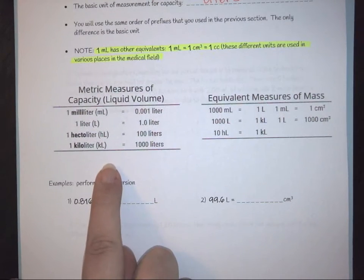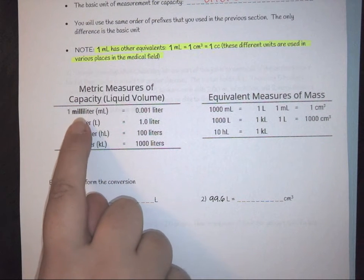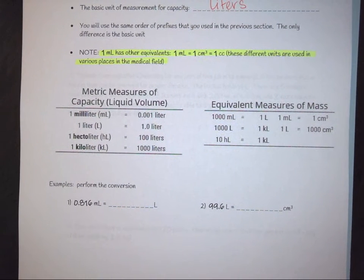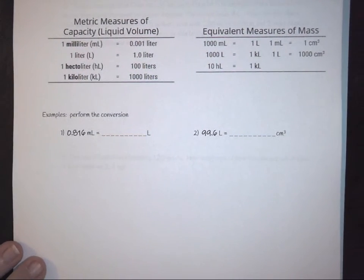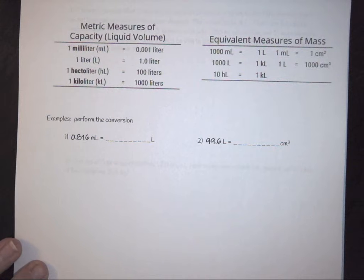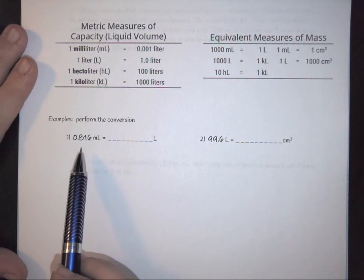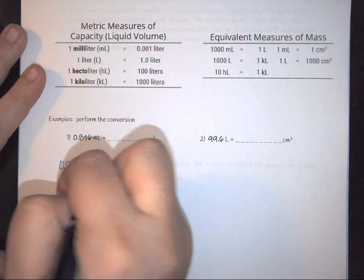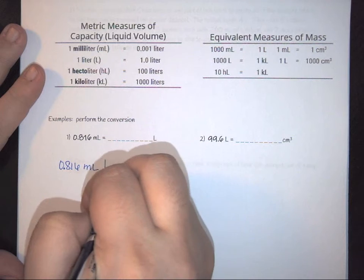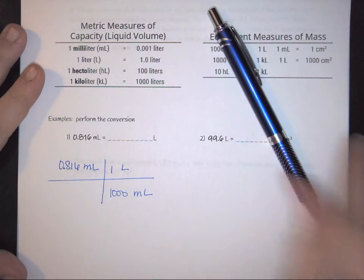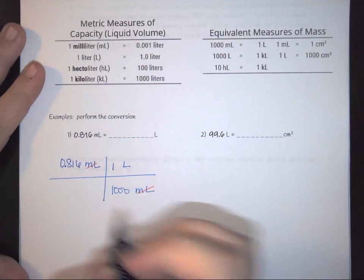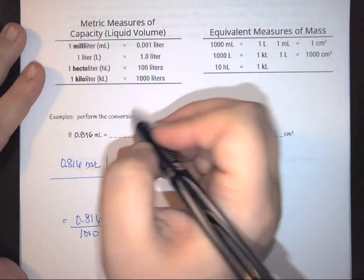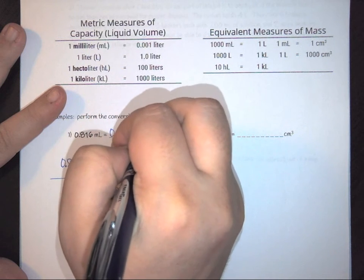Just like with grams and meters, liters use the same prefix system: milliliter, centiliter, deciliter, liter, decaliter, hectoliter, kiloliter. Conversions work exactly the same as with weight. For example, 0.816 milliliters converted to liters: using 1 liter per 1,000 milliliters, the milliliters cancel, giving 0.816 divided by 1,000 — which equals 0.000816 liters.